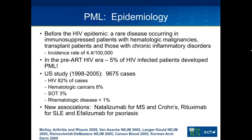There are some new associations with PML: natalizumab, a monoclonal antibody used for multiple sclerosis and Crohn's disease; rituximab for SLE; and efalizumab, another monoclonal used for the treatment of psoriasis.